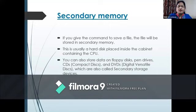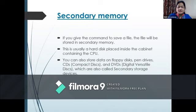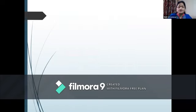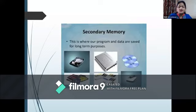Secondary memory. If you give the command to save a file, the file will be stored in secondary memory. This is usually a hard disk placed inside the cabinet containing the CPU. You can also store data on floppy disks, pen drives, CDs (compact disks) and DVDs (digital versatility disks), which are also called secondary storage devices. This is where our programs and data are saved for long-term purposes.